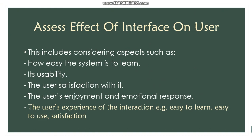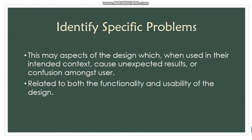In simple terms, this is the user experience of the interaction — for example, how easy it is to learn, easy to use, and the satisfaction of the user when using the system. Lastly, the third goal is to identify specific problems: aspects of the design which, when used in the intended context, cause unexpected results or confusion among users related to both the functionality and usability of the design. That's all for the main goals of evaluation.